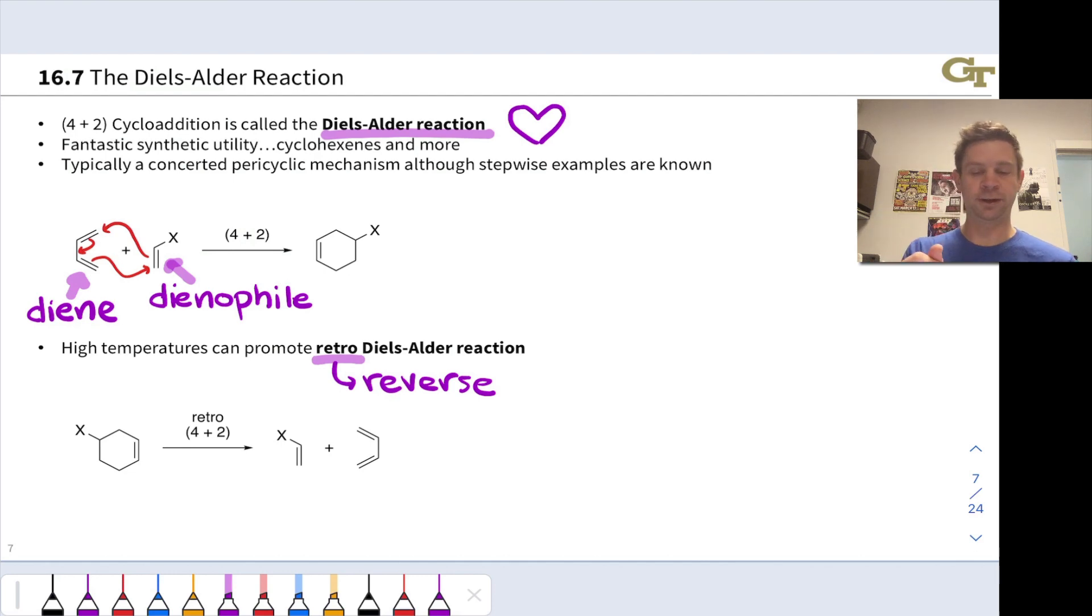A six-membered cyclohexene like this back to a 2-pi component and a 4-pi component. This is favored at high temperatures because, as you might imagine, delta S for the process is greater than zero. The entropy change is positive since we're going from one starting material to two products.